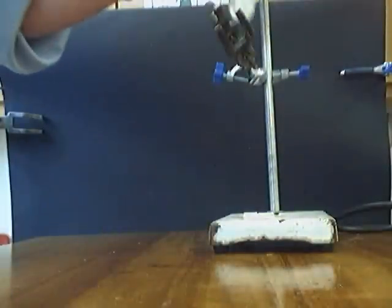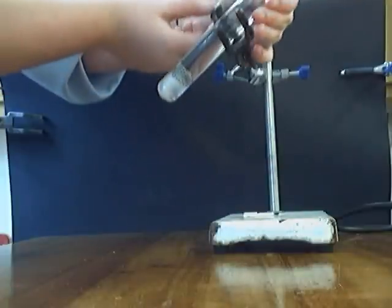Pour the water into the test tube with the ice at the base held by the gauze. Put the test tube into the clamp stand keeping it away from the Bunsen burner.